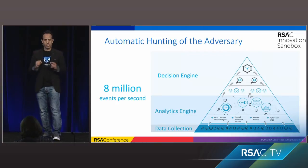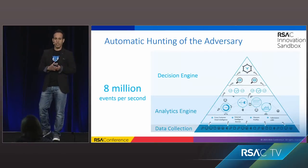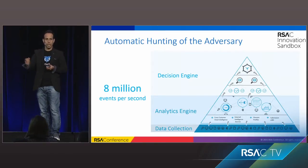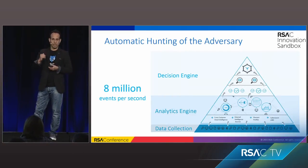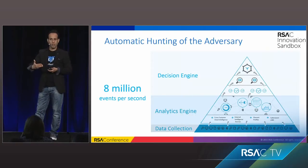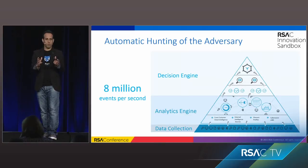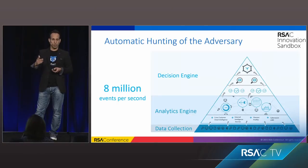Then the analytic engines kick in and start to calculate, connecting the dots between abnormalities in the environment and the indications or traces of an attack. It generates evidence — in our jargon — and sends that evidence to the decision engine. The decision engine evolves the evidence into suspicions, and the suspicions are evolved into what we call a malicious operation, or malop.